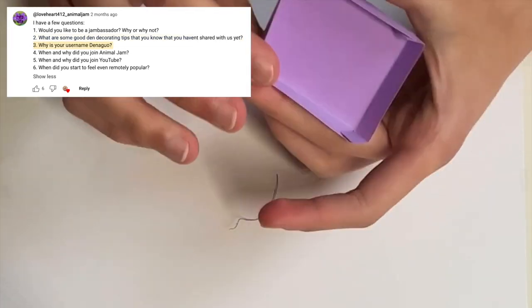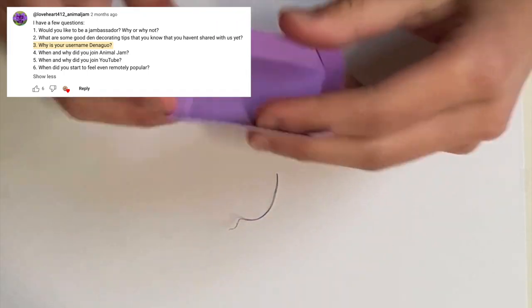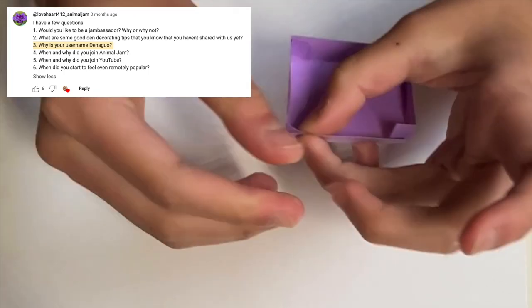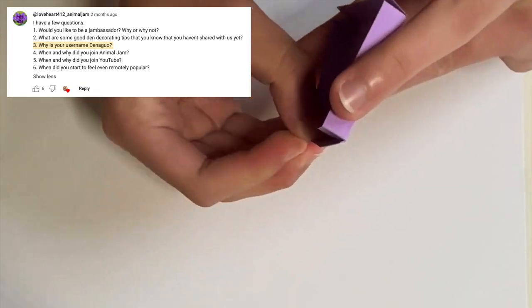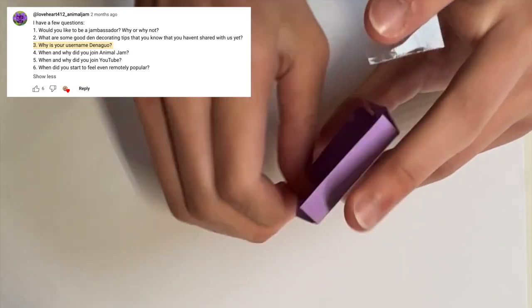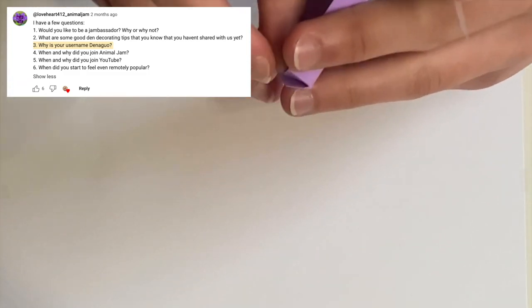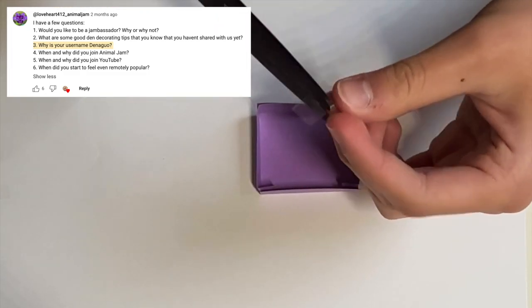The third question, why is your username Dina Guo? When I was first making my account seven years ago, I misread the instructions as smart jammers do use their real names. But my parents have always told me not to share personal information online, so I went with Dina Guo. Dina is my first name, and Guo is the fake last name I added.